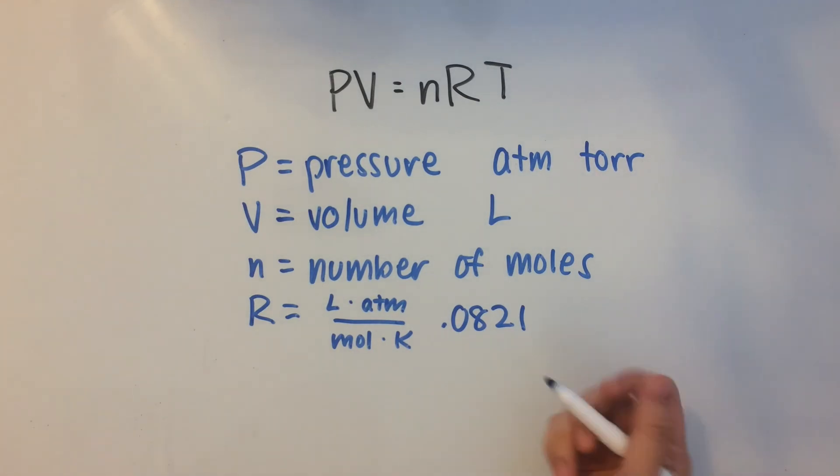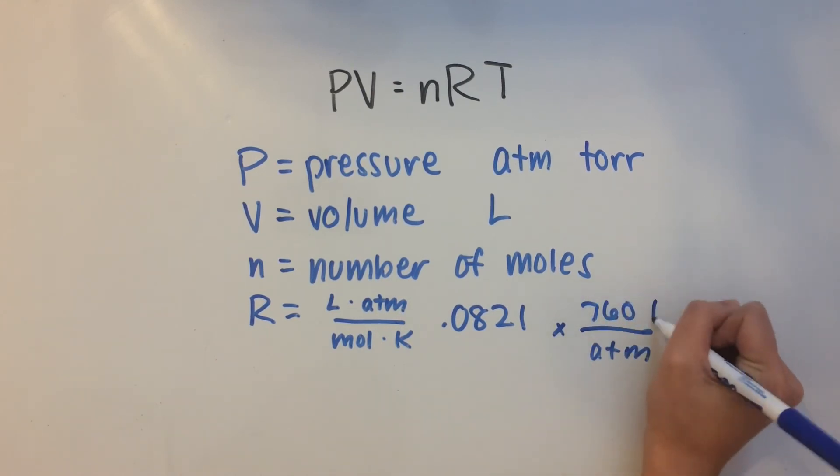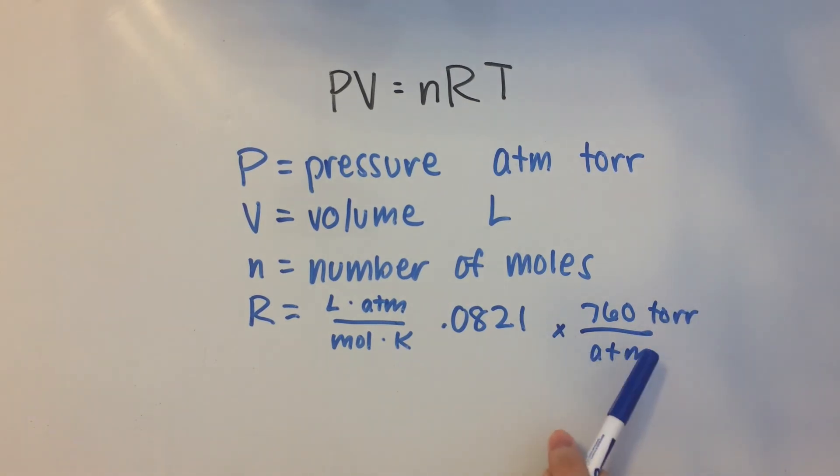And if you need to, you could just convert it to torr by using this conversion factor, 760 torr for every one atmosphere. So these would cancel out and leave you with liter torr over mole Kelvin.